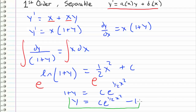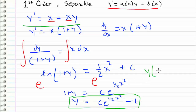So again, this is our general solution to this differential equation. And as I said in the previous example, we could find the unique solution if we were given an initial condition. We would do that by plugging in 0 into this expression, setting it equal to y-naught and solving for c.